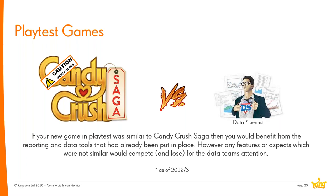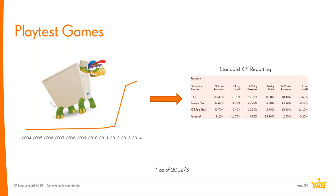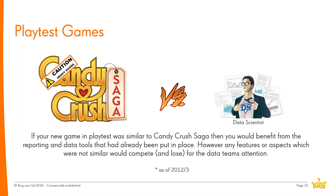A data scientist was the go-to in playtest situations. The playtest team would get as much as possible from overlap with Candy Crush reporting, but anything non-standard fell to data scientists to produce. This created prioritization challenges because Candy Crush was still peaking, representing the majority of users and revenue, making it very difficult to divert resources to smaller playtest games that might one day become the next Candy Crush — but just not yet.